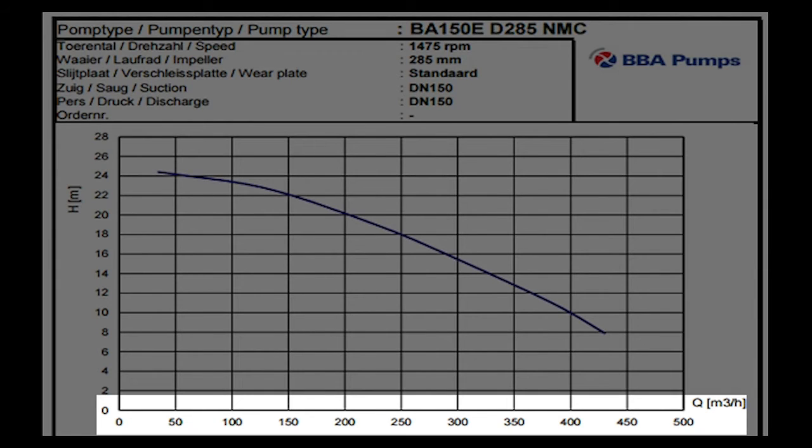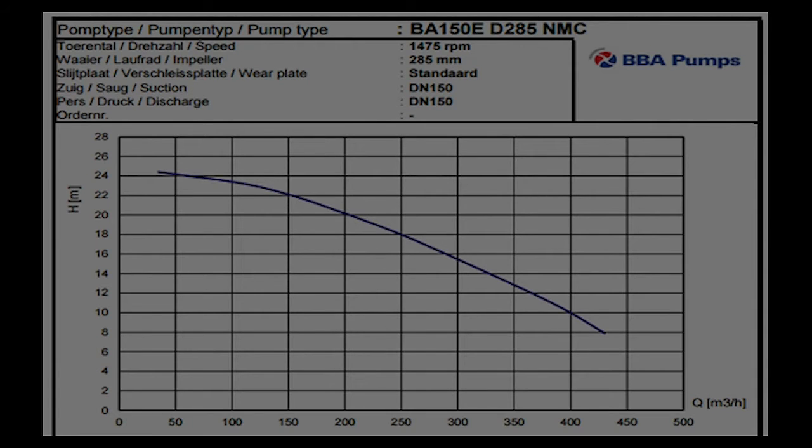In the first segment, the pressure difference is plotted against the pump capacity. On the left side of the curve, the pressure is high with a low capacity. On the right side, it's the opposite - low pressure at high capacity.